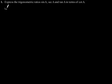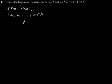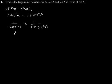Now, we know that cosec square a is equal to 1 plus cot square a. Or, we can write 1 by cosec square a is equal to 1 by 1 plus cot square a. Since 1 by cosec square a is equal to sin square a, this gives sin square a equal to 1 by 1 plus cot square a.